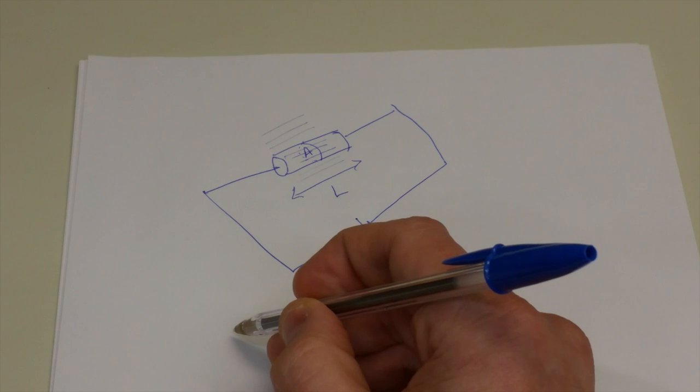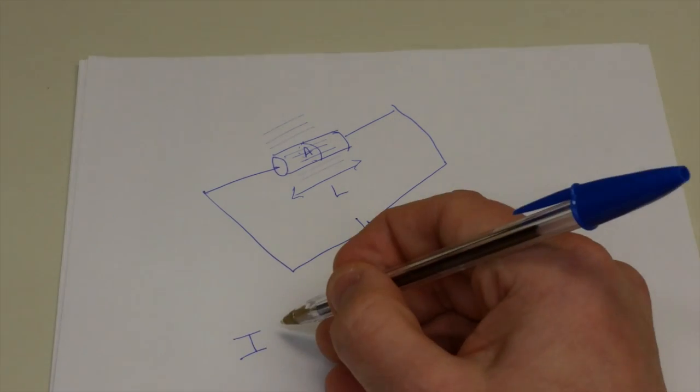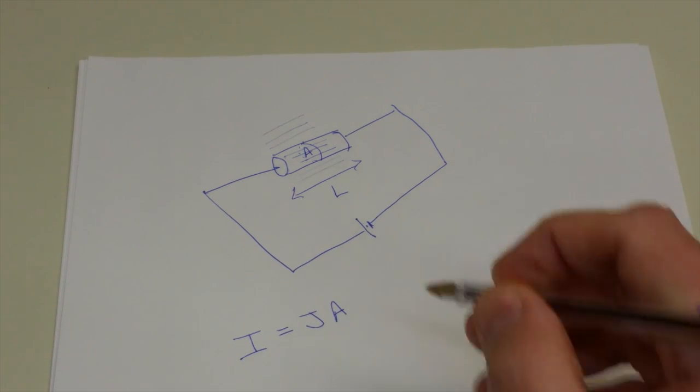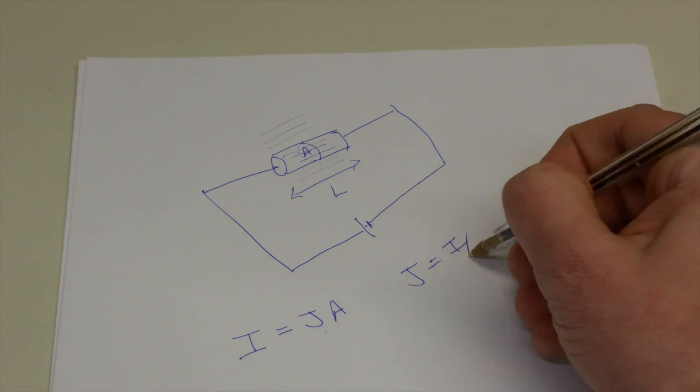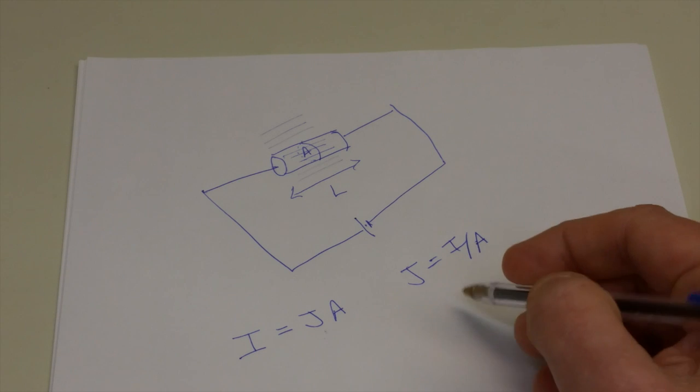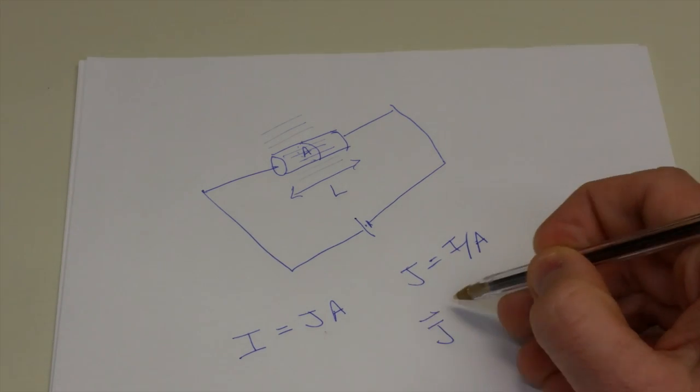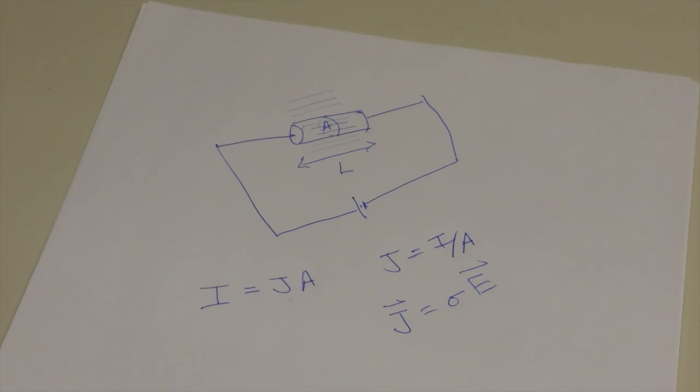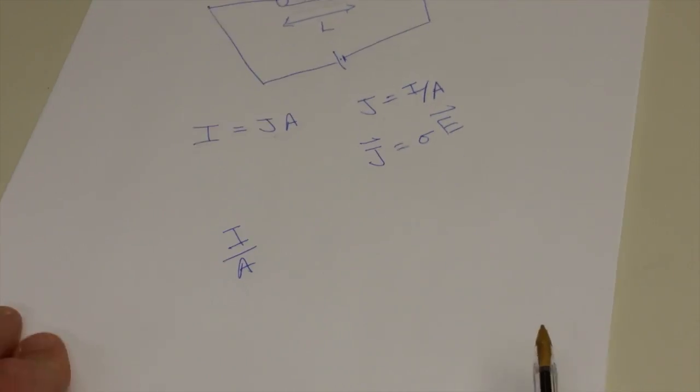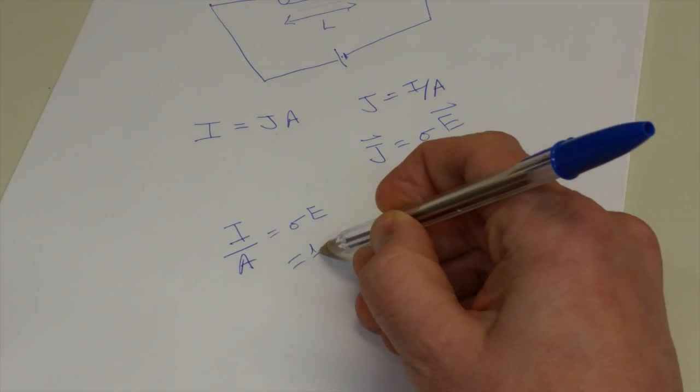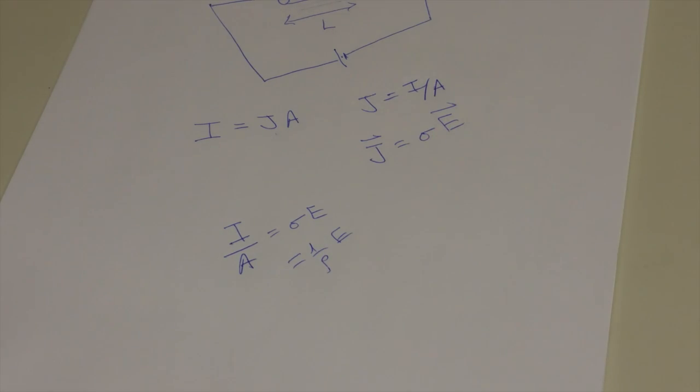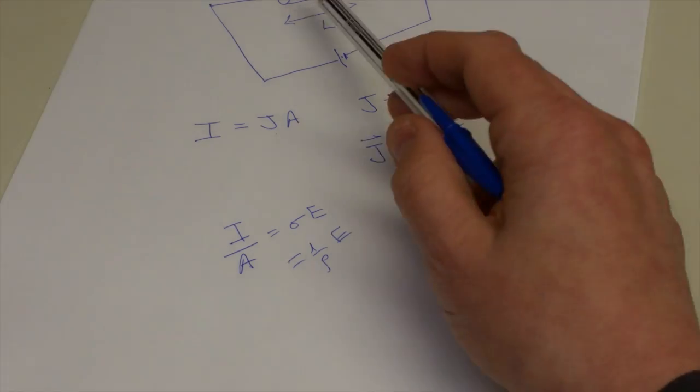We can compute the current through that resistor I. It's going to be the current density times the cross-sectional area. Current density J is the current per area. This is how the general form of Ohm's law is usually expressed. It's expressed in terms of the current density, the conductivity of the material, and the electric field. We can write Ohm's law as I over A equals sigma E. But we know that sigma is one over the resistivity rho times E, and E can be expressed as V over L.